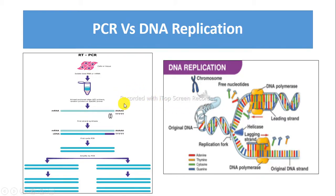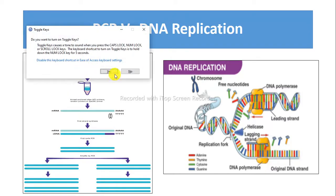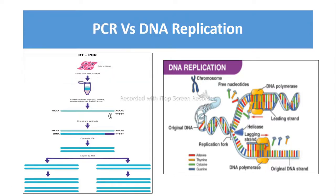In PCR, the replication fork does not form, whereas in DNA replication the replication fork does form. That is why PCR is a discontinuous process which proceeds through 30 to 40 cycles, whereas DNA replication is a continuous process.